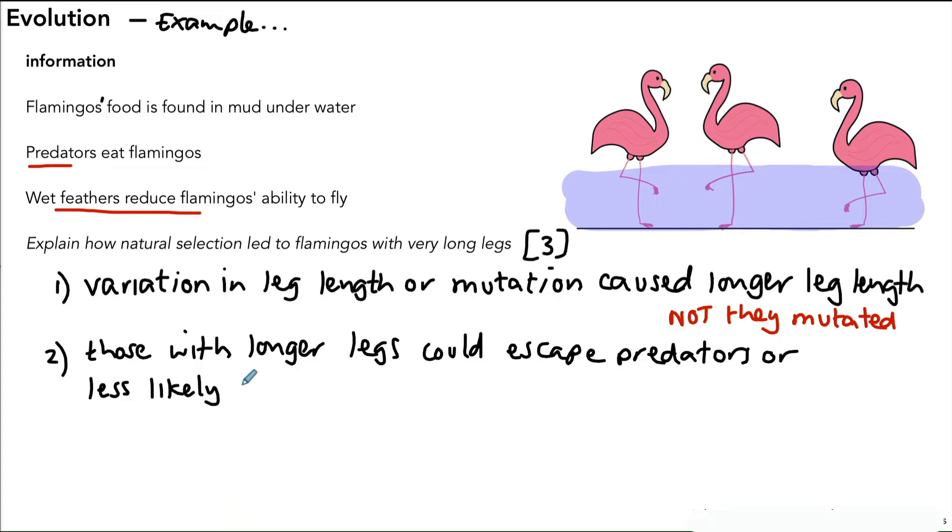Less likely to get wet feathers, and as we know the wet feathers reduces the ability to fly. So longer legs means less likely to get wet feathers. Or you could say with longer legs they could feed in deeper water. So there's three possible advantages you can give from the clues given in the question why longer legs are better.